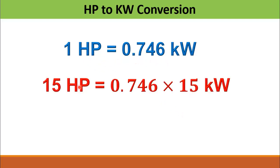Let's say we have 15 horsepower. We have to multiply 15 with 0.746 in order to calculate the kilowatts and the result comes out to be 11 kilowatts.